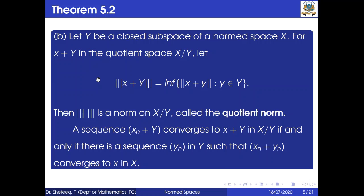Theorem 5.2, part B. Let Y be a closed subspace of a normed space X. For x + Y in the quotient space X/Y, let the triple norm of x + Y equal the infimum of norm(x + y) such that y belongs to Y. Then this norm is a norm on X/Y, called the quotient norm.